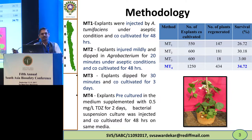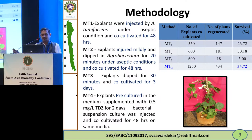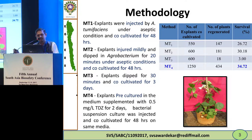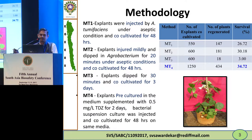In Method 3 (MT3), explants were dipped for 30 minutes and co-cultured for three days, increasing the co-cultivation period. In Method 4 (MT4), explants were pre-cultured in medium supplemented with 0.5 mg per litre TdZ for two days, and the bacterial suspension was then injected and co-cultured for 48 hours on the same media.